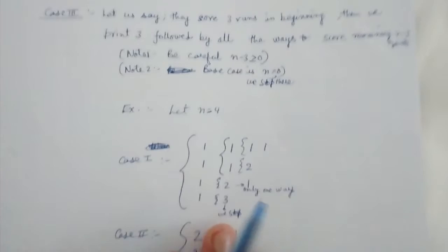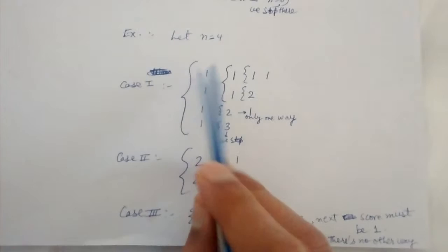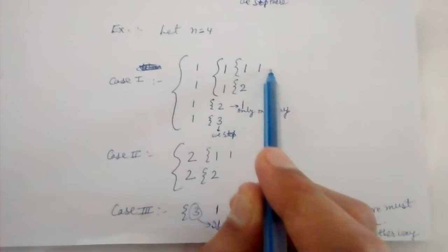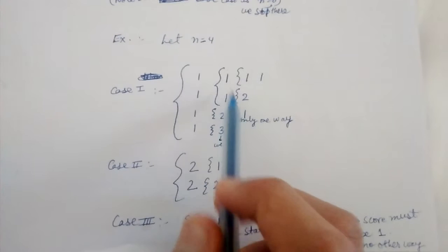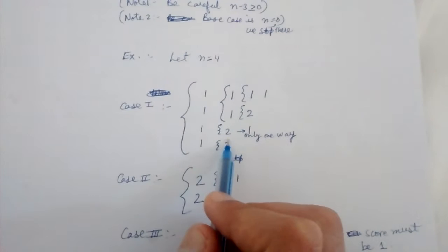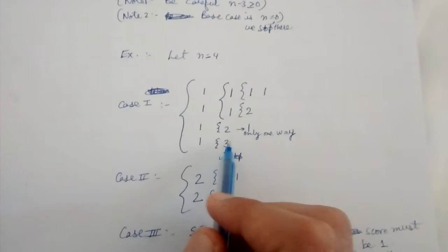We take an example to clearly understand this thing. We take an example of N is equal to 4 points. So I print 1 and pass the remaining 3 points to my children. One of my children decides to print 1 in the beginning. Another might decide to print 2 in the beginning. Another might decide to print 3 in the beginning. The children who printed 3 has nothing more to do because the score of 4 has been achieved. So this is the case where N is equal to 0. We stop there.